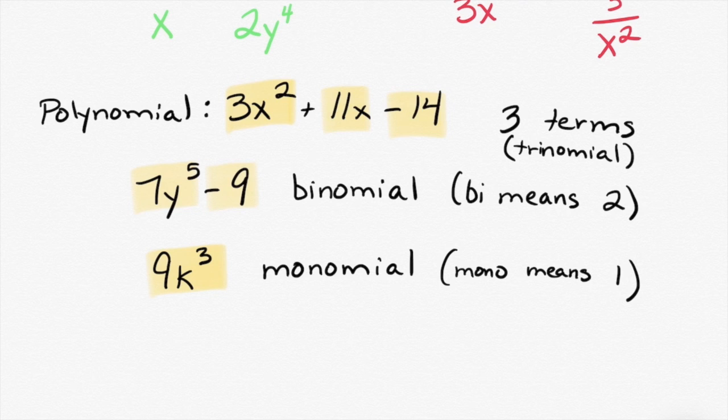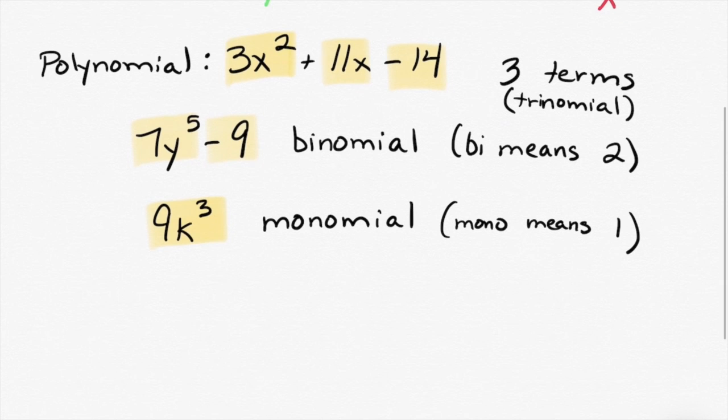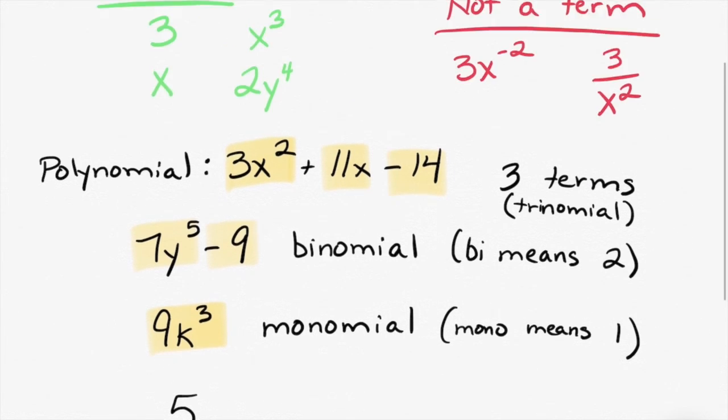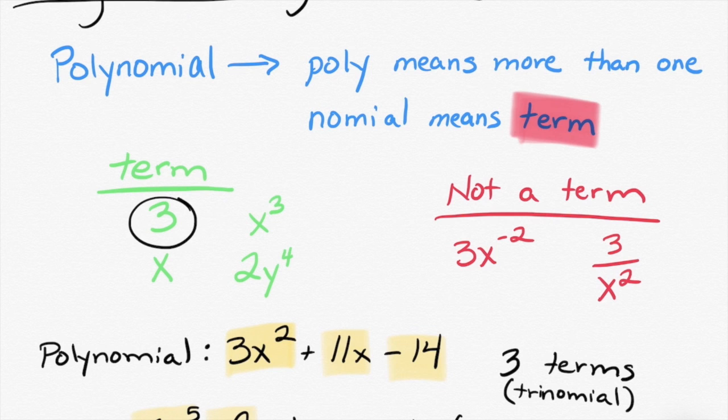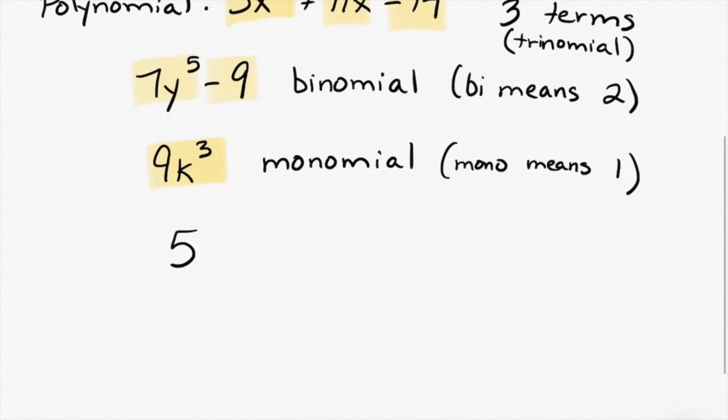Do they have to have those variables in them or do they not have them? That is such a good question. Is that a monomial? Yes. Yes, it is. Remember, the first term I gave you was just plain old three. It can be just a number. That's an excellent question. This is also a monomial. And the term that it has is five.